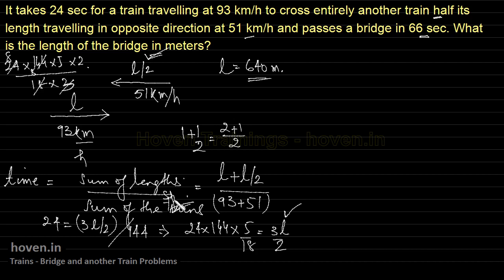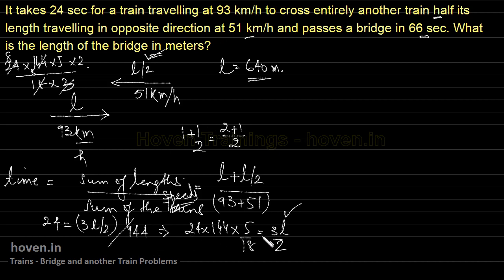To recap: I simply put the values into the formula — time equals sum of lengths divided by sum of speeds. Time was given as 24, so 24 equals 3L by 2 divided by 144 km/h, where 144 comes from 93 plus 51 since the trains are moving in opposite directions. This equation gives us L equal to 640 meters.